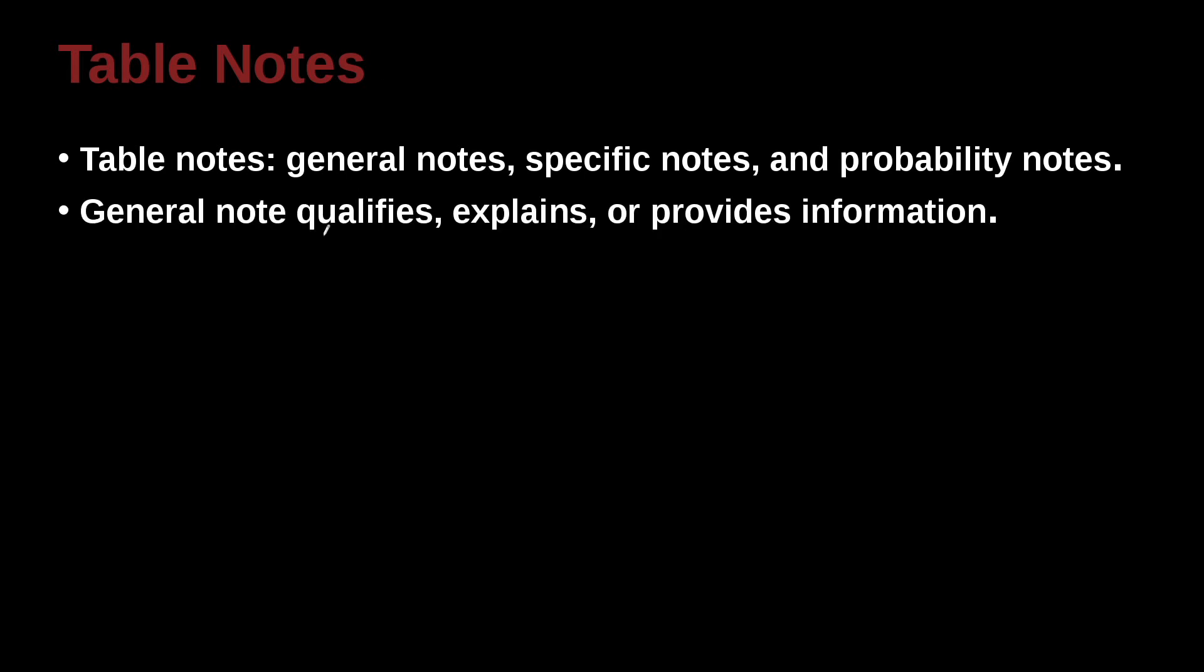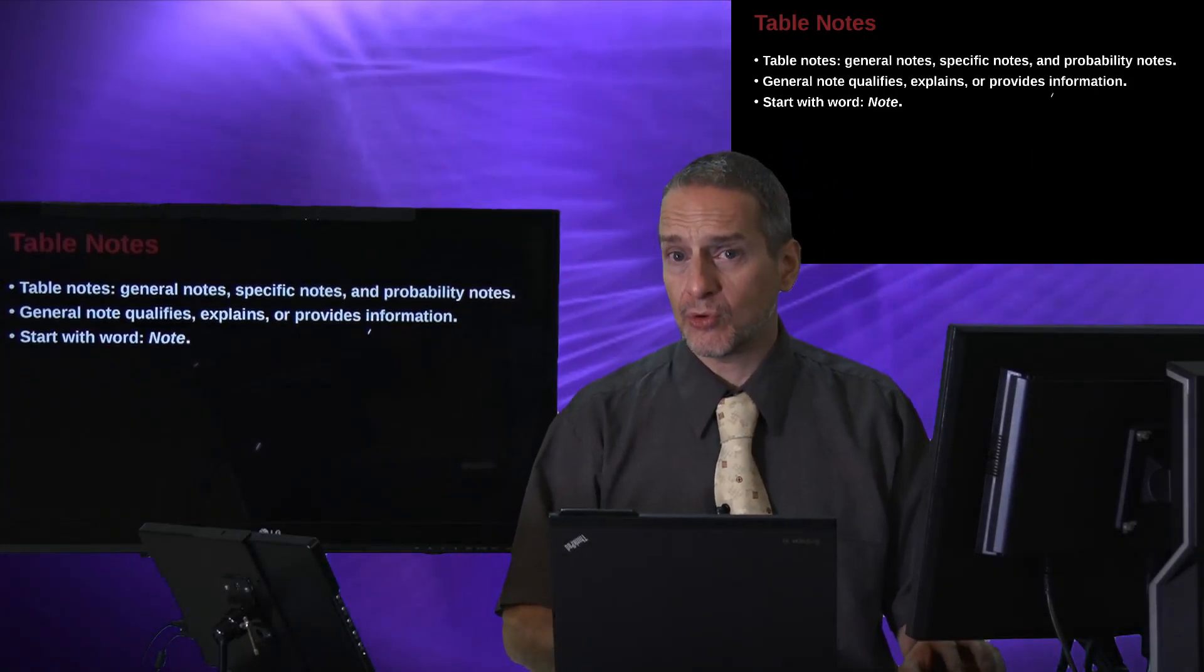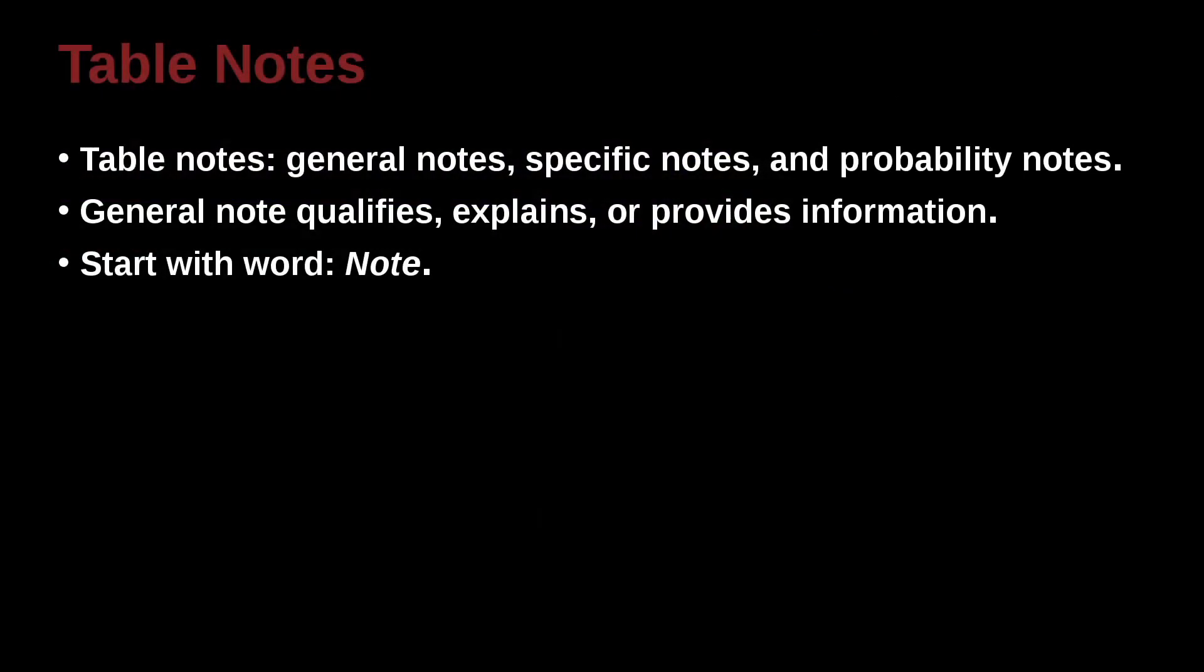General notes often qualify, explain, or provide information to help the user understand something. These are kind of general ideas, letting me understand more about the table, or why things are in the table, or what they mean. When you write a note, you begin with the word 'note,' italicized at an angle like this, with a period at the end. No space before, but then you must have space after.